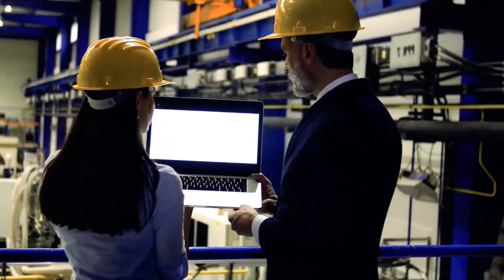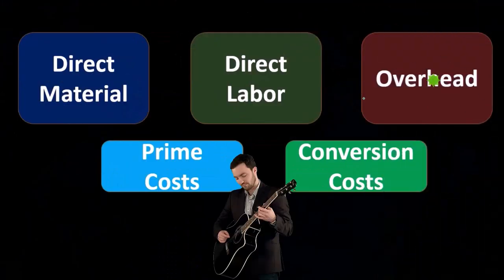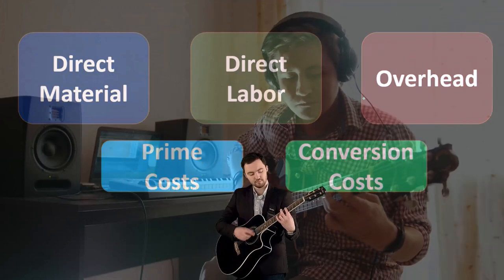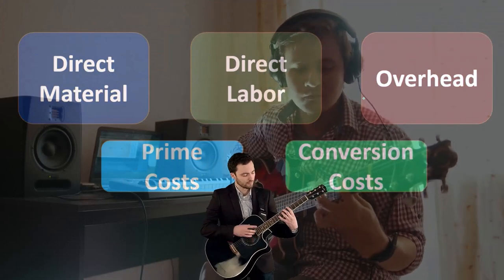Whereas the overhead is indirect because in a job cost system, we wouldn't know which guitar to apply all the stuff in overhead to. We have to find some way to do that.